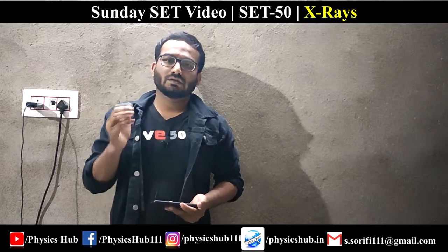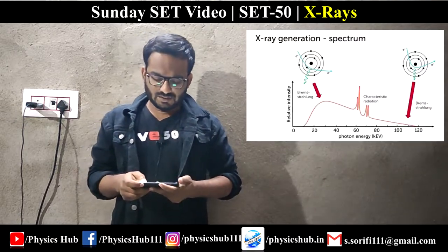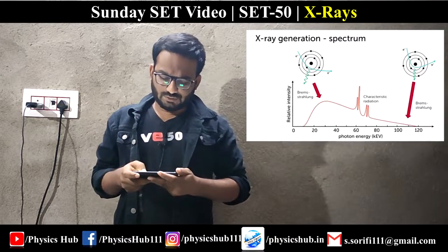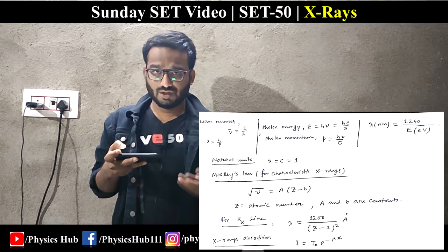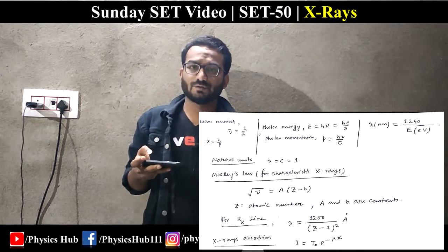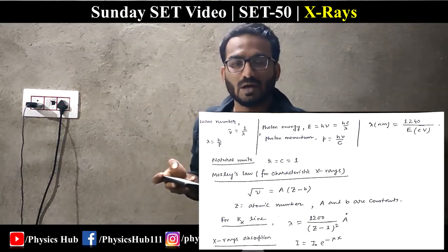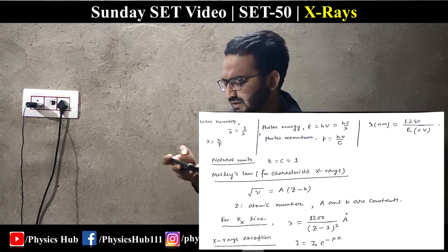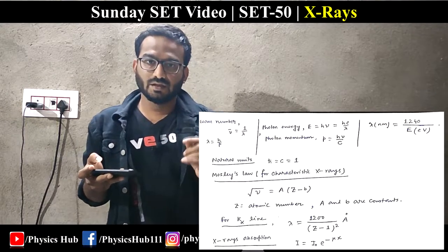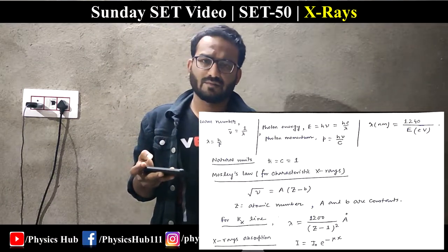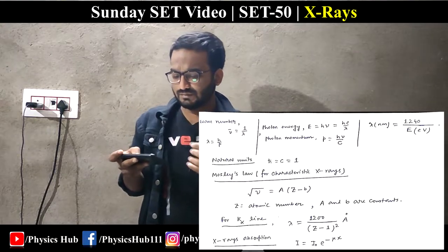Before going to the main problems, let me give you the formula set. The photon energy is E equals hν, and momentum p equals hν/c. The minimum wavelength formula: λ_min equals 1240 divided by eV, which gives λ in nanometers.